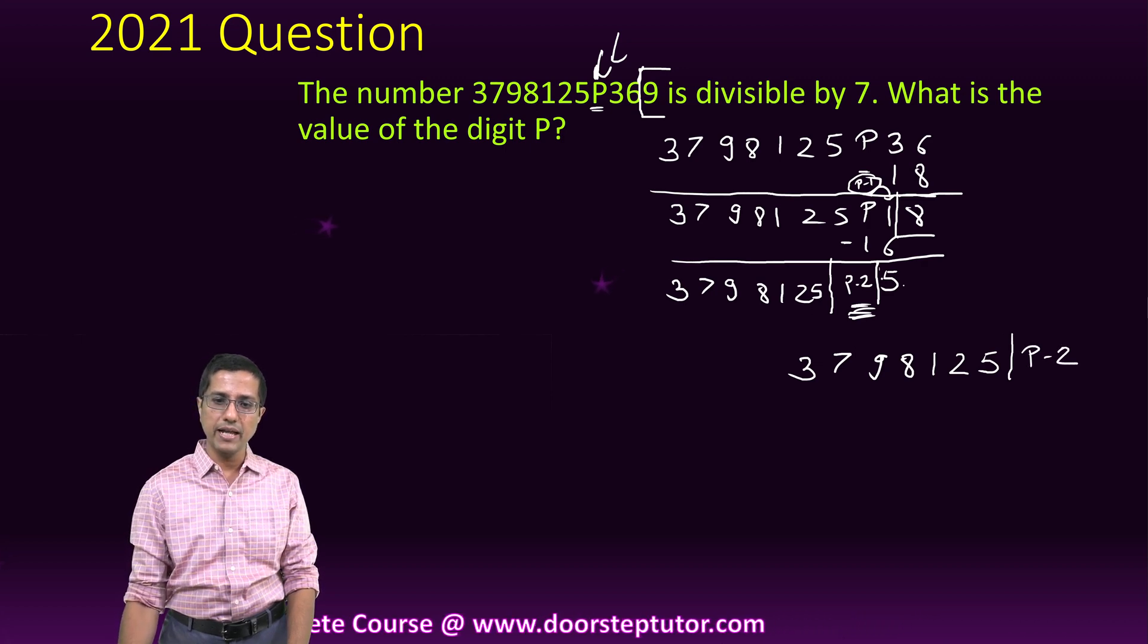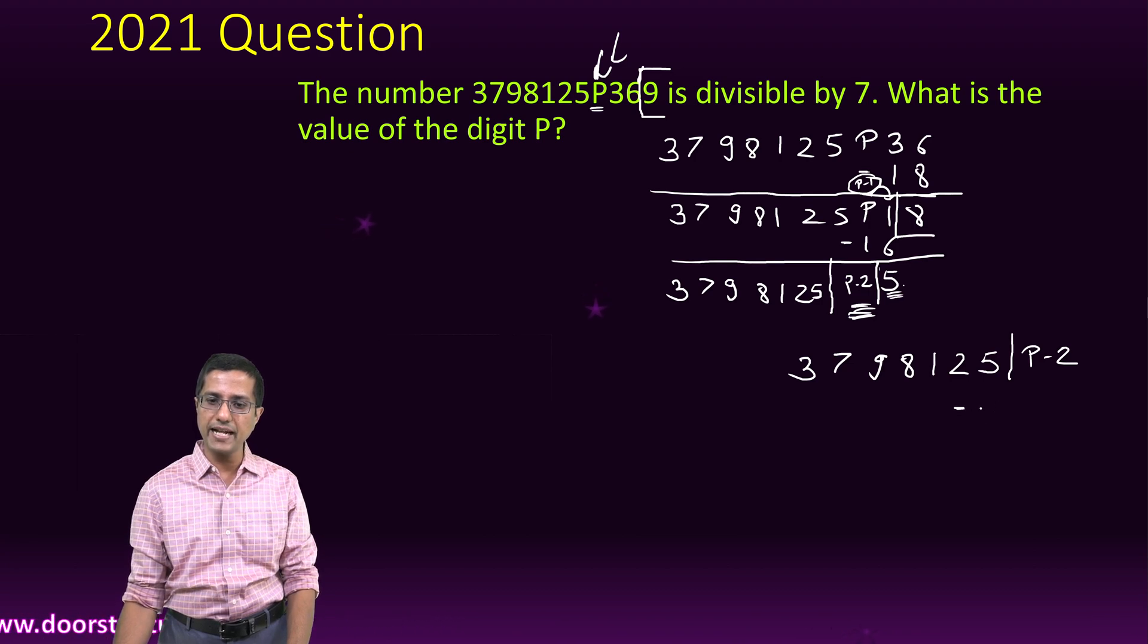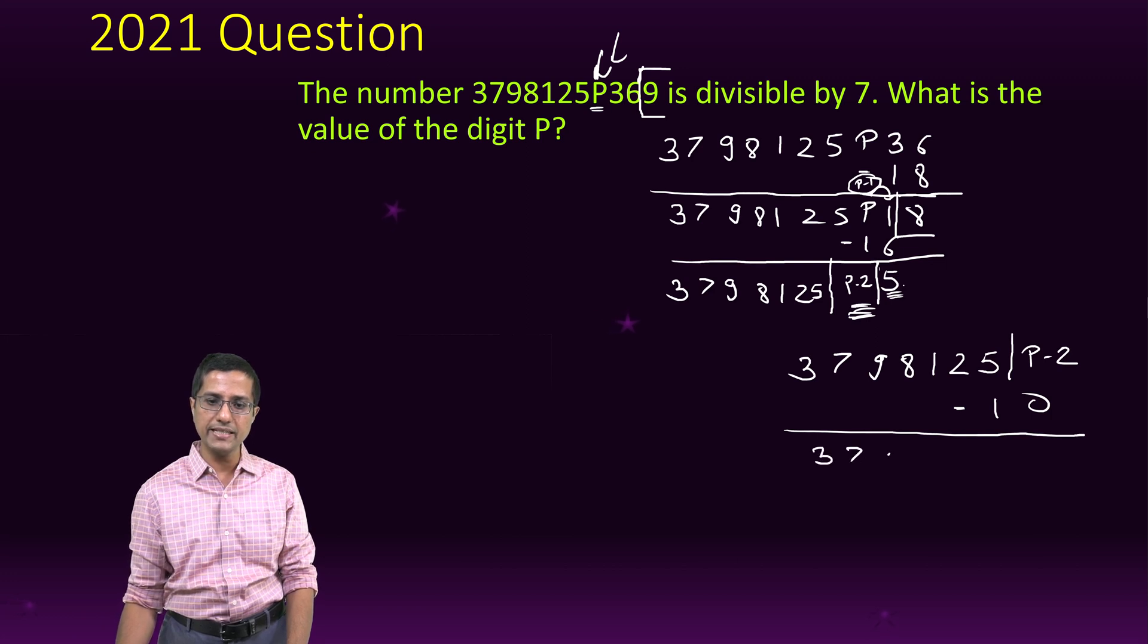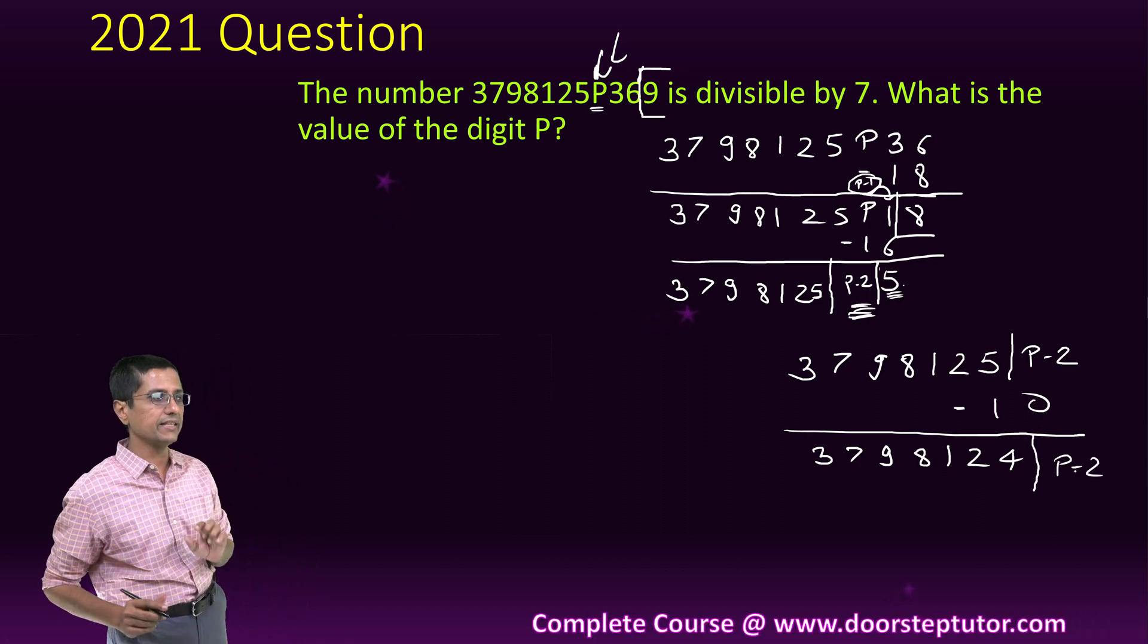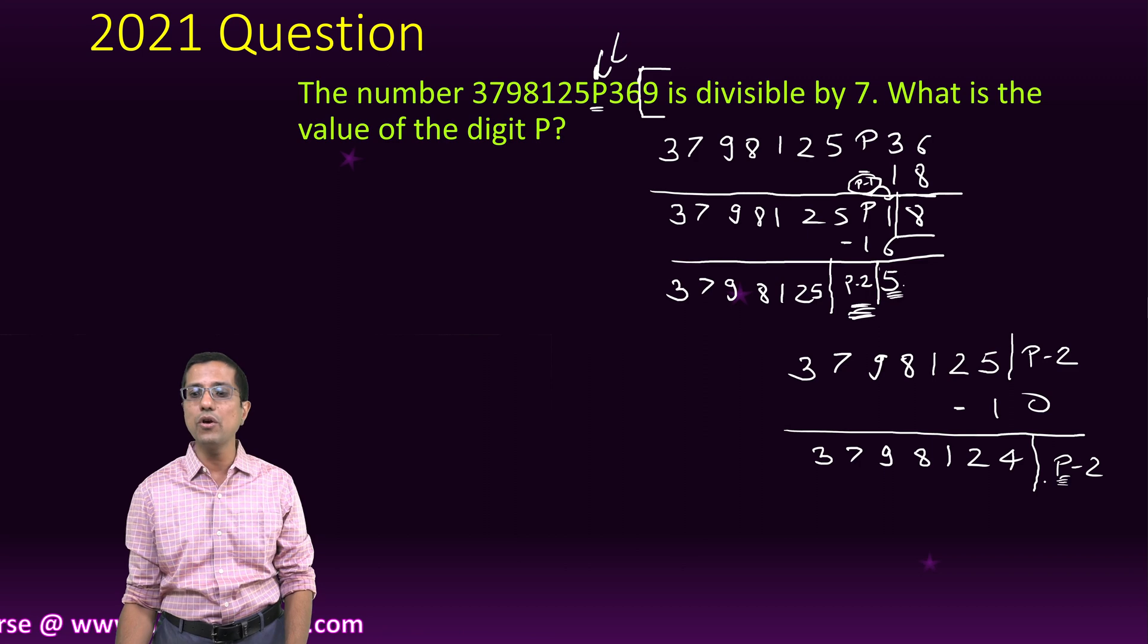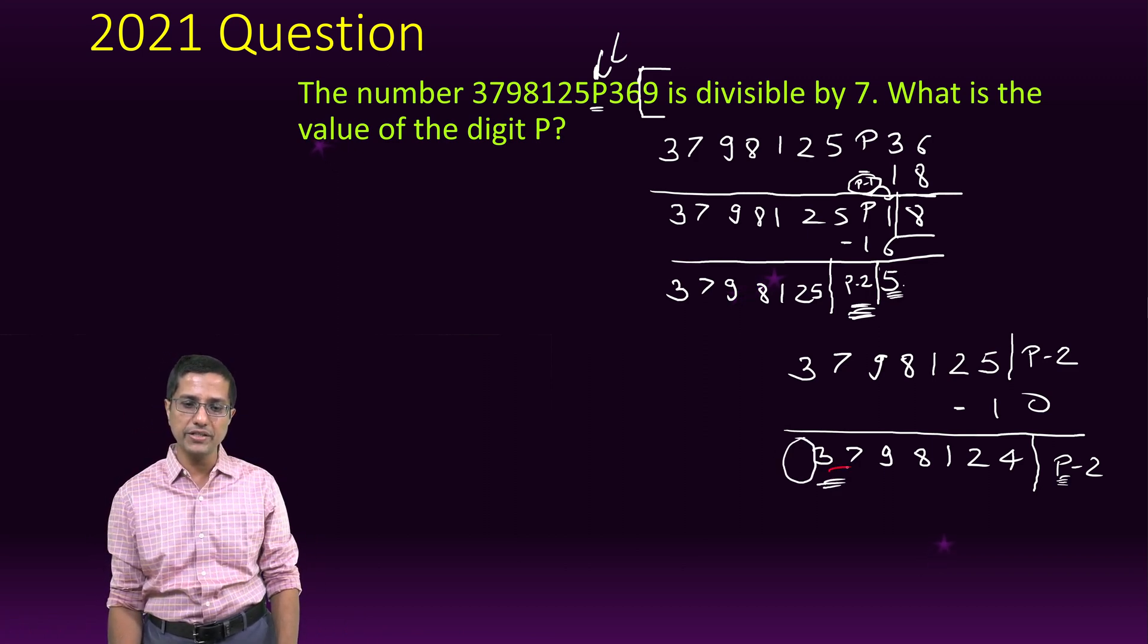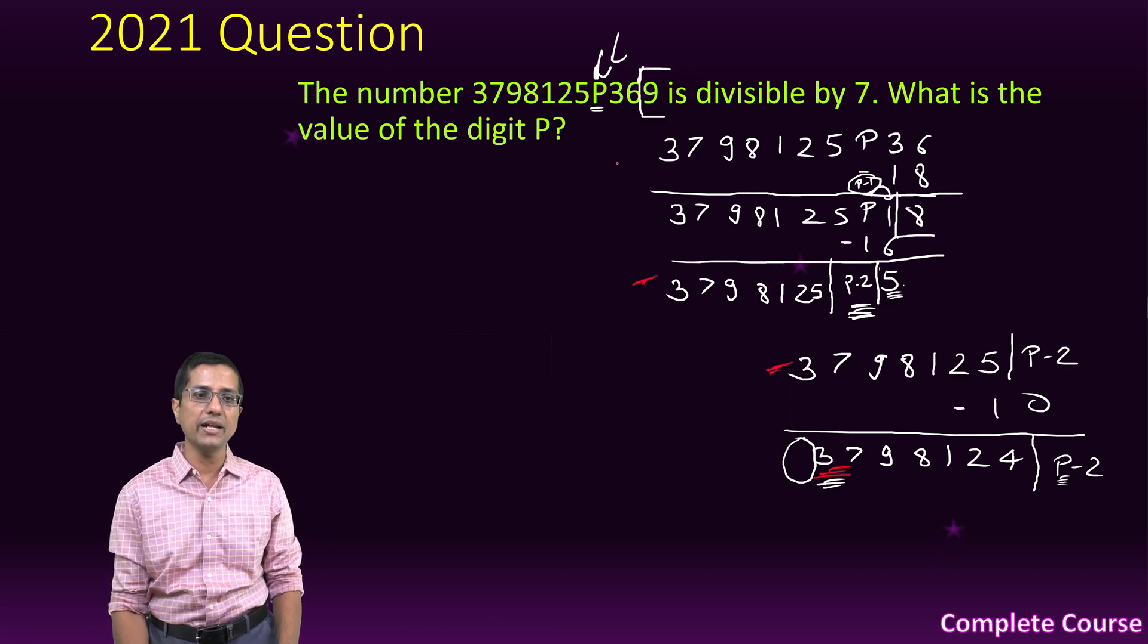I would again apply the divisibility test and I would say that if this number were to be divisible by 7 then my 3798125 and then last digit is p minus 2. And then the unit digit I have removed and I multiply by 2, that becomes 10 and I subtract from here. This becomes 3798124 and now more importantly the p minus 2 has come in the units place.